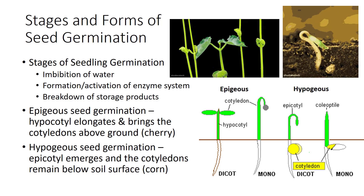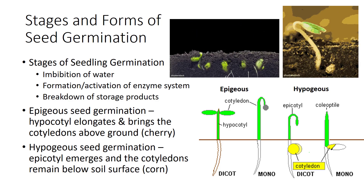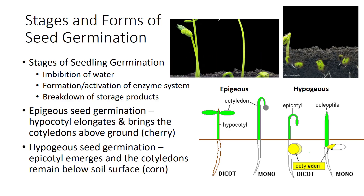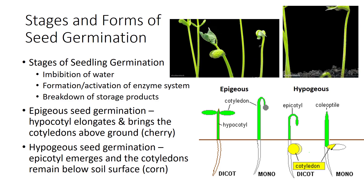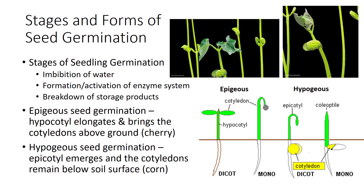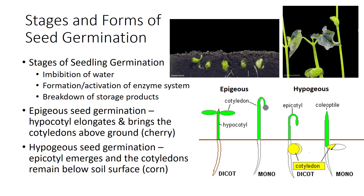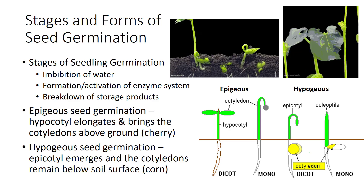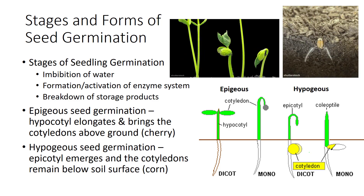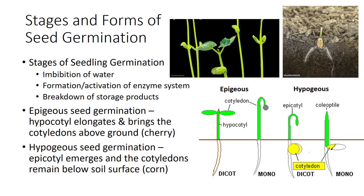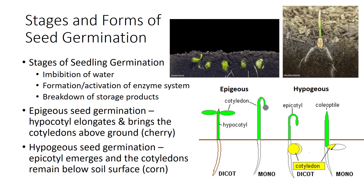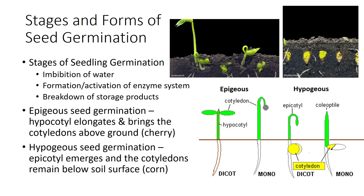The first visible sign of seed germination and growth is the emergence of the radicle, followed by growth of the seedling. The following are two common forms of seed germination. Epigeous seed germination is where the hypocotyl elongates and brings the cotyledons above ground, like in cherries. Hypogeous seed germination is where the epicotyl emerges and the cotyledons remain below the soil surface, such as in corn.